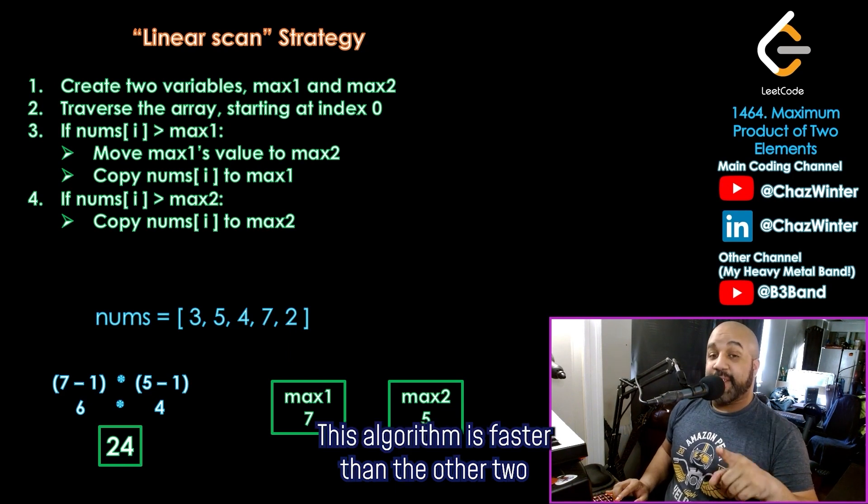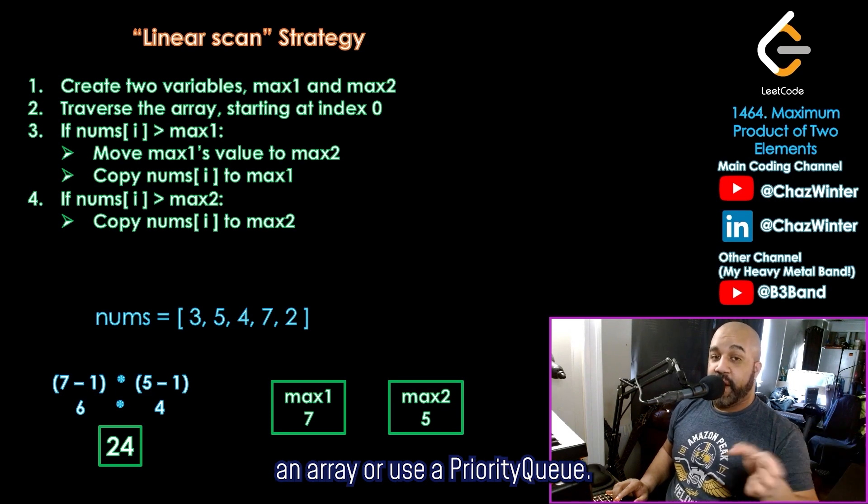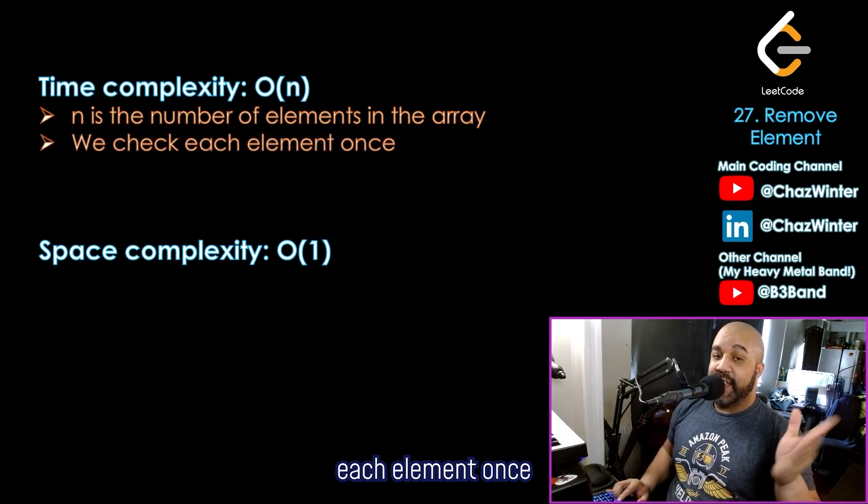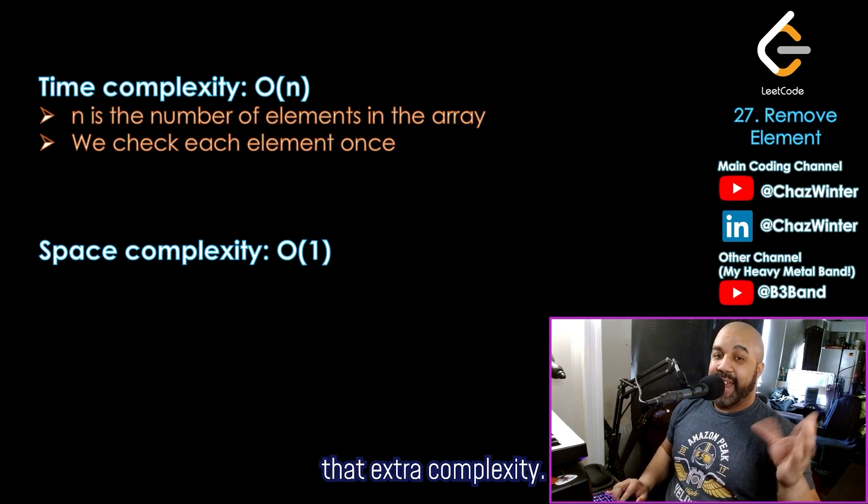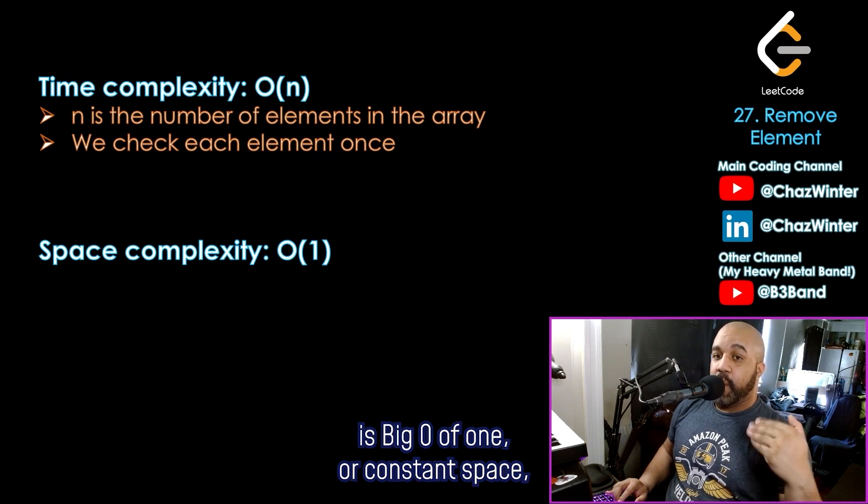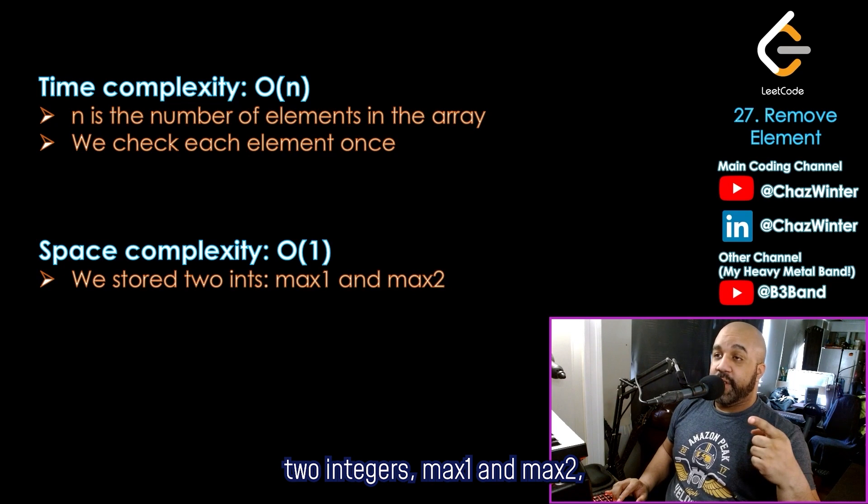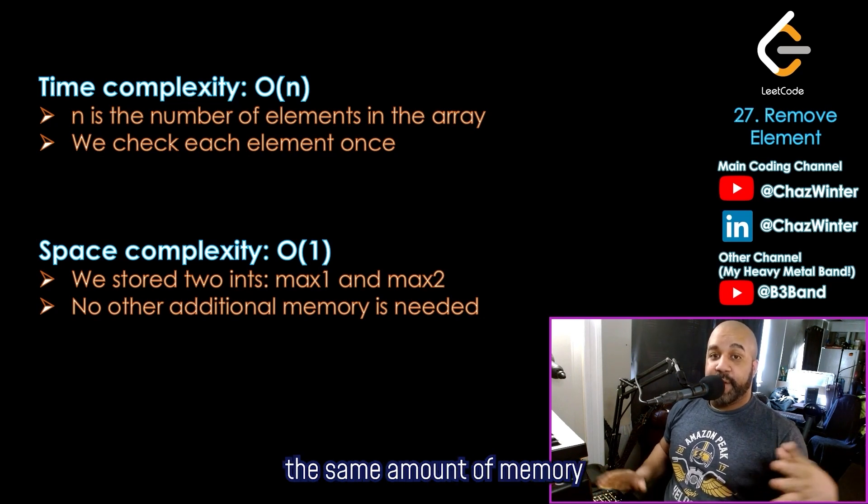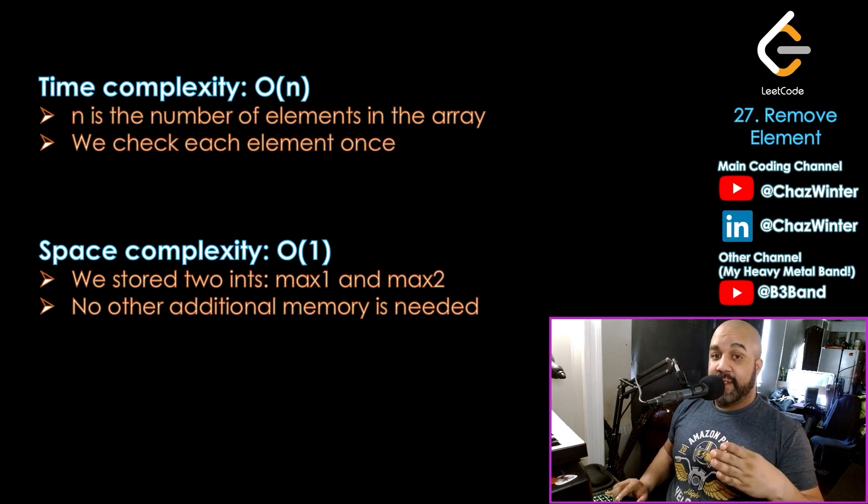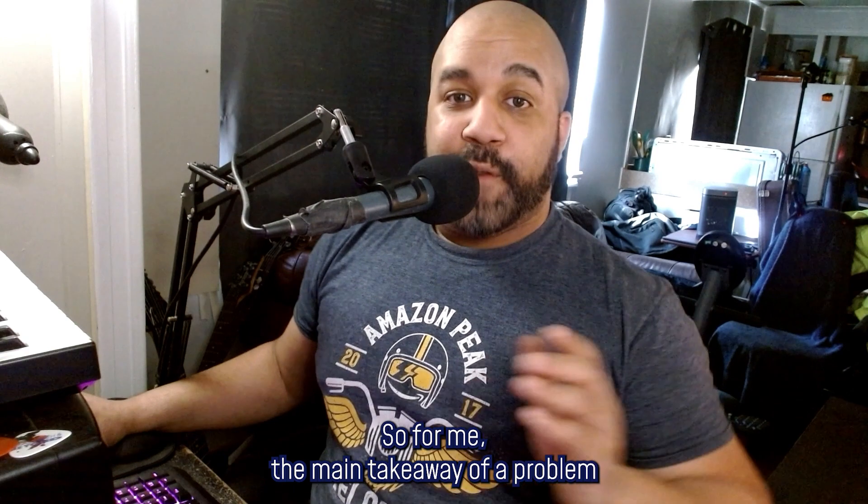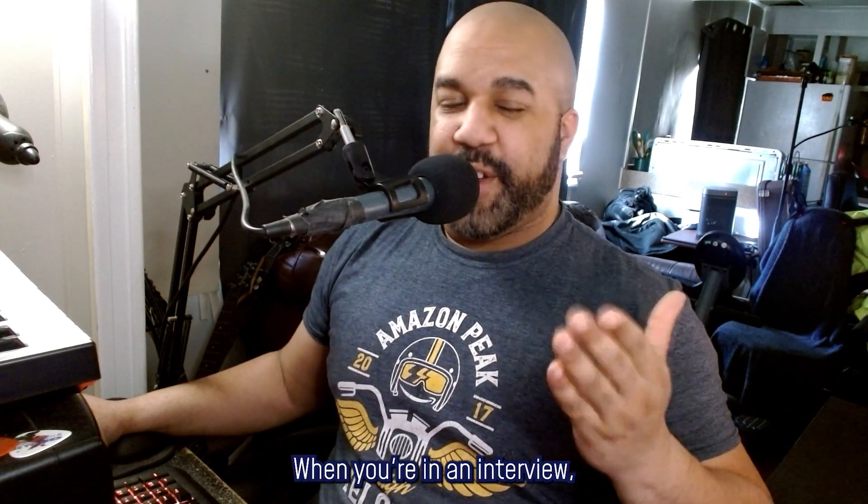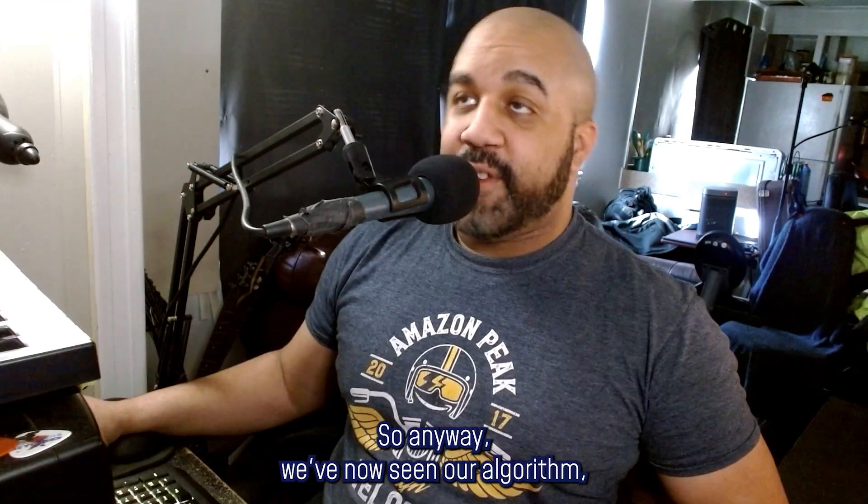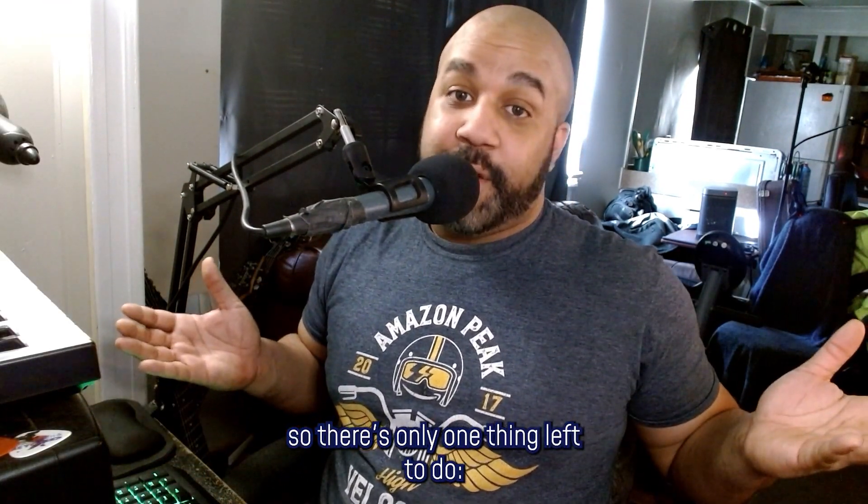This algorithm is faster than the other two that we mentioned where we sort an array or use a priority queue. The time complexity of this is only big O of n, where n is the number of elements in the array. And that's because we only have to check each element once. There's no sorting, so we don't introduce that extra complexity. And then the space complexity here is big O of one or constant space. Because all we did was store two integers, max one and max two, and no other memory was needed. Unlike, say, the priority queue, where we had to use the same amount of memory that was required for the array in extra space in order to create that tree structure for the priority queue. So for me, the main takeaway of a problem like this is just when you're in an interview, you don't need to always overthink it. Sometimes the simplest solution turns out to be the best solution. So anyway, we've now seen our algorithm, so there's only one thing left to do. Let's code some Java.